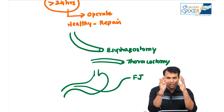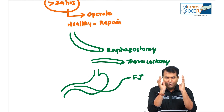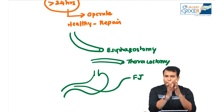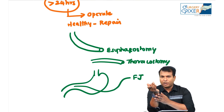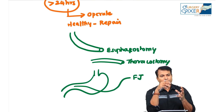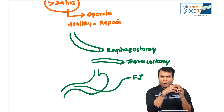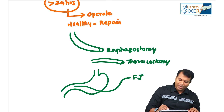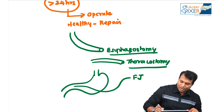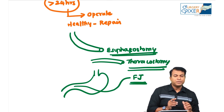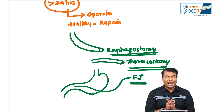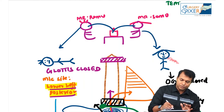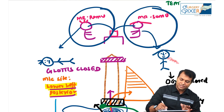A patient who comes within 24 hours — the ruptured tissue will be healthy, so we can do a primary repair. Even after 24 hours, if the tissue is healthy, primary repair is done. But if tissue is unhealthy, we debride and do esophagostomy, thoracostomy, and feeding jejunostomy. Please don't forget Boerhaave syndrome and Mallory-Weiss tear — high yield MCQs for your exam.